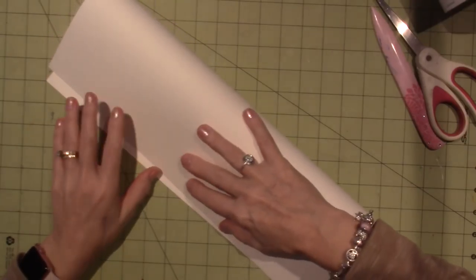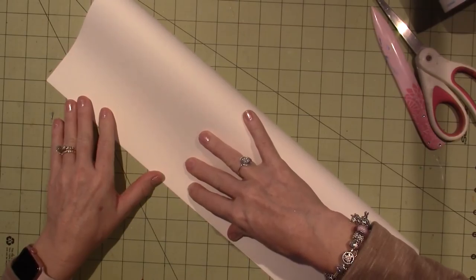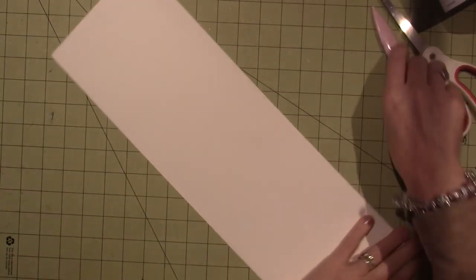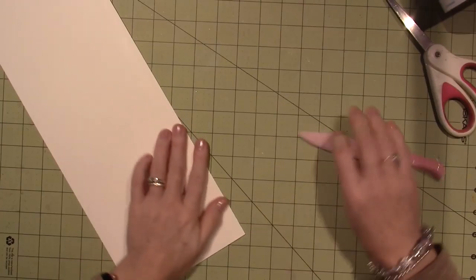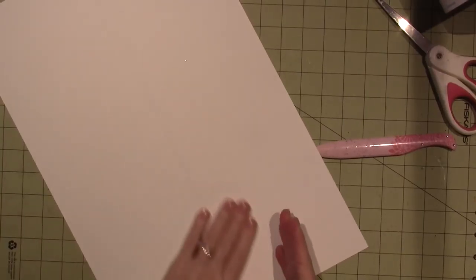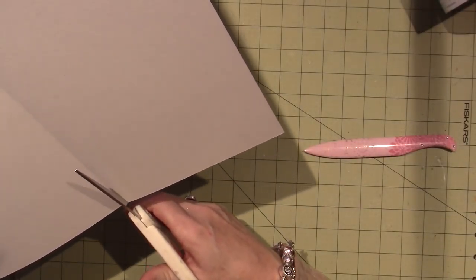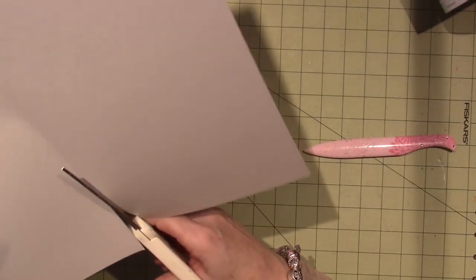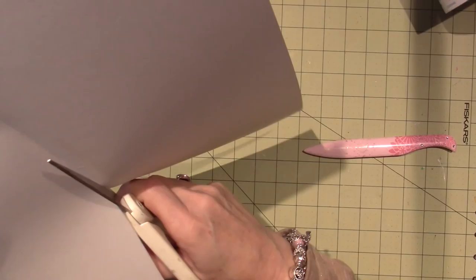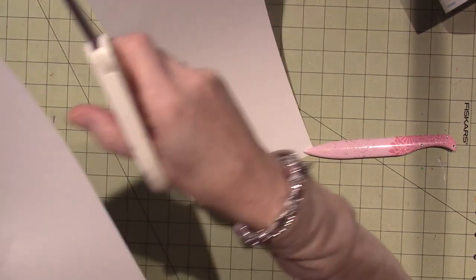I've just folded it in half the long way and cut it with my scissors because I don't have a cutting board. You can use an X-Acto blade, however you want to get this to go in half. Or just use any paper, scrapbook paper. Our pages were like 9 by 6.